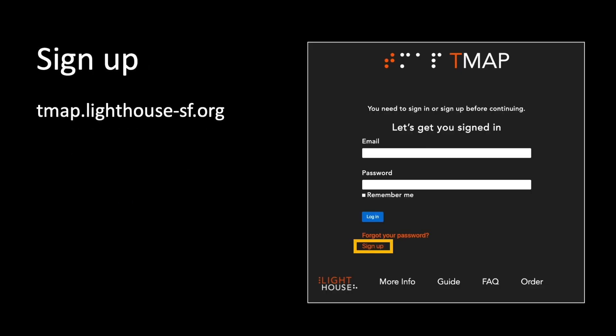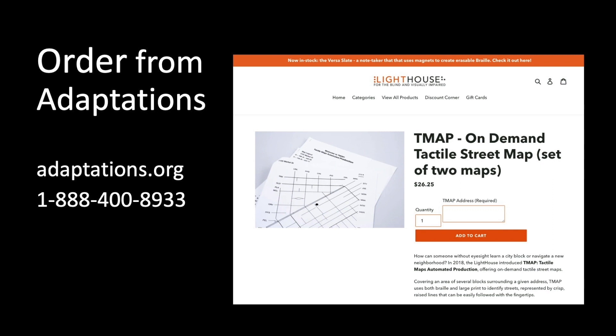To sign up for a user account to generate and print your own maps, visit tmap.lighthouse-sf.org. If you don't have a way to print or emboss your map file, you can order one from the Lighthouse's Adaptations store on adaptations.org, or by calling 1-888-400-8933.